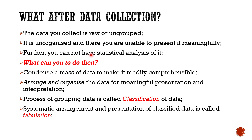You cannot perform statistical analysis until you have grouped or meaningful data. What we can do is condense a mass of data to make it readily comprehensible, and arrange and organize data for meaningful presentation and interpretation. That is the idea behind classification and tabulation. The process of grouping data is called classification, and the systematic arrangement and presentation of classified data is called tabulation.